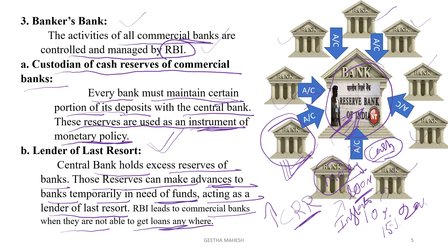A bank will not immediately reach RBI — it will first try to get a loan from neighboring banks. But if it is not able to get funds from neighboring banks and there is a rush of the public rushing to withdraw their deposits, that time RBI will help that particular bank.